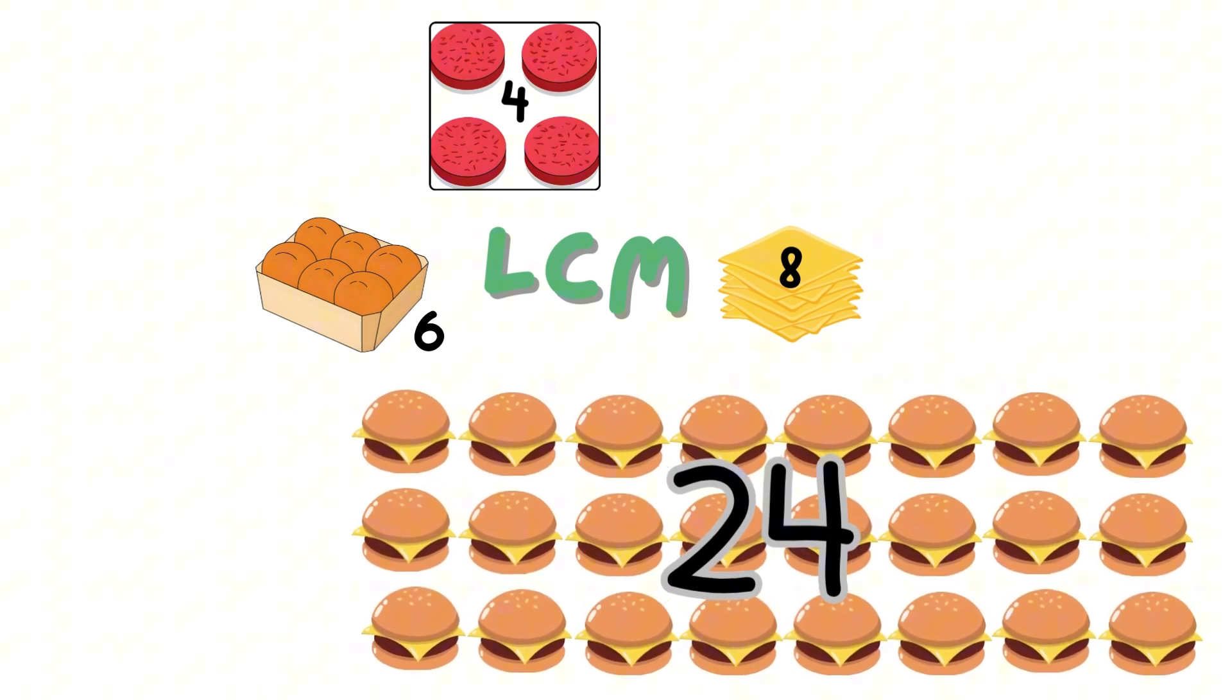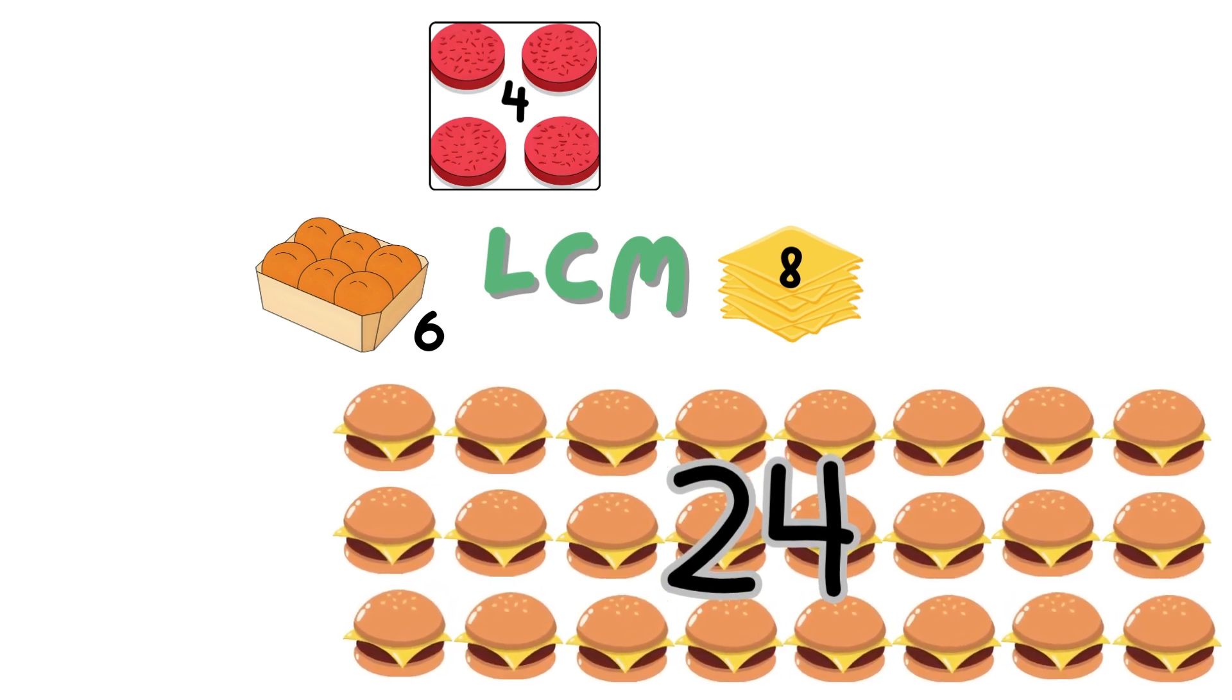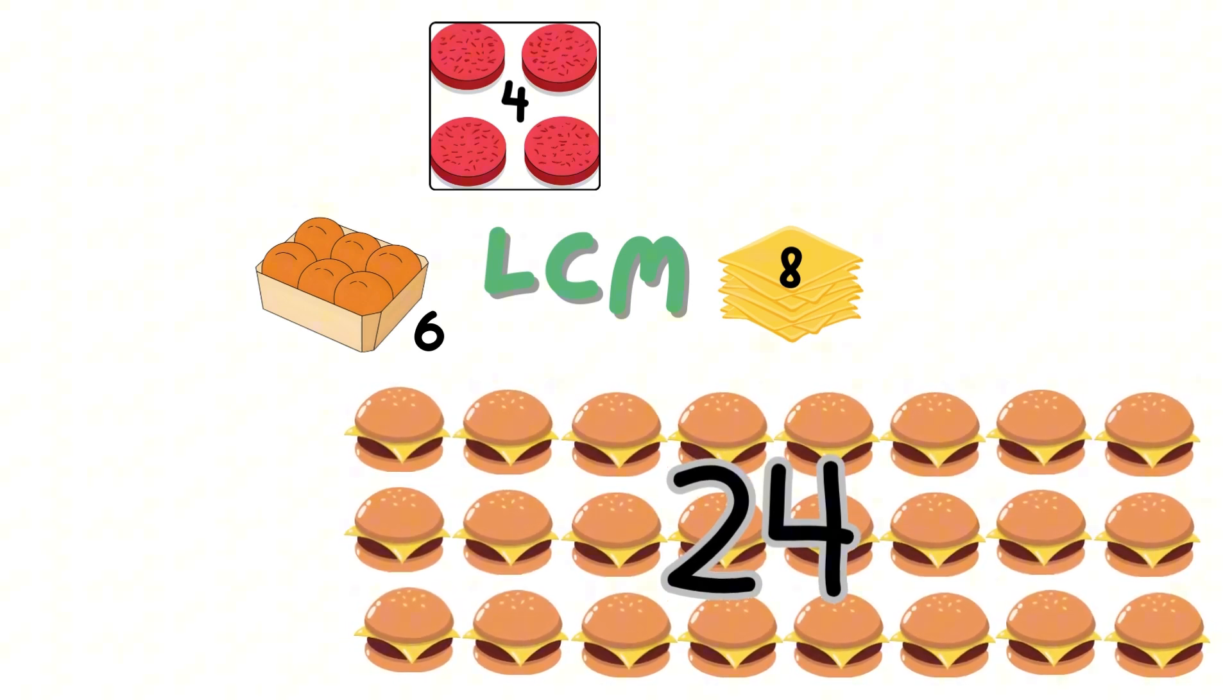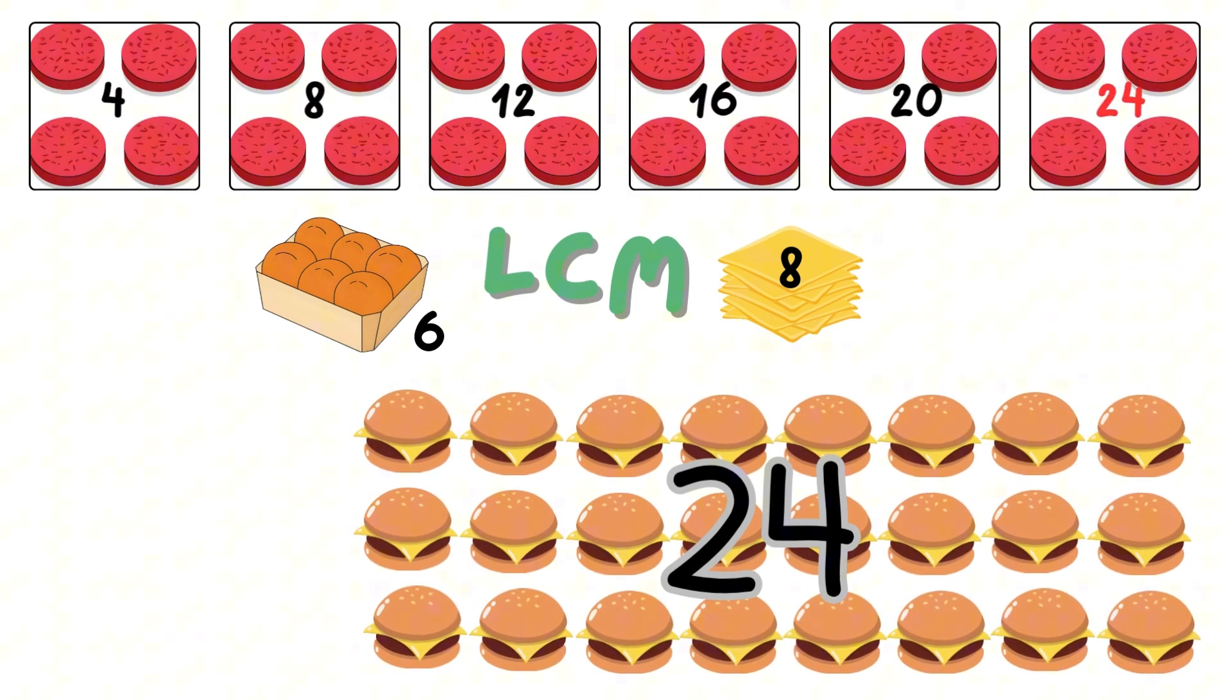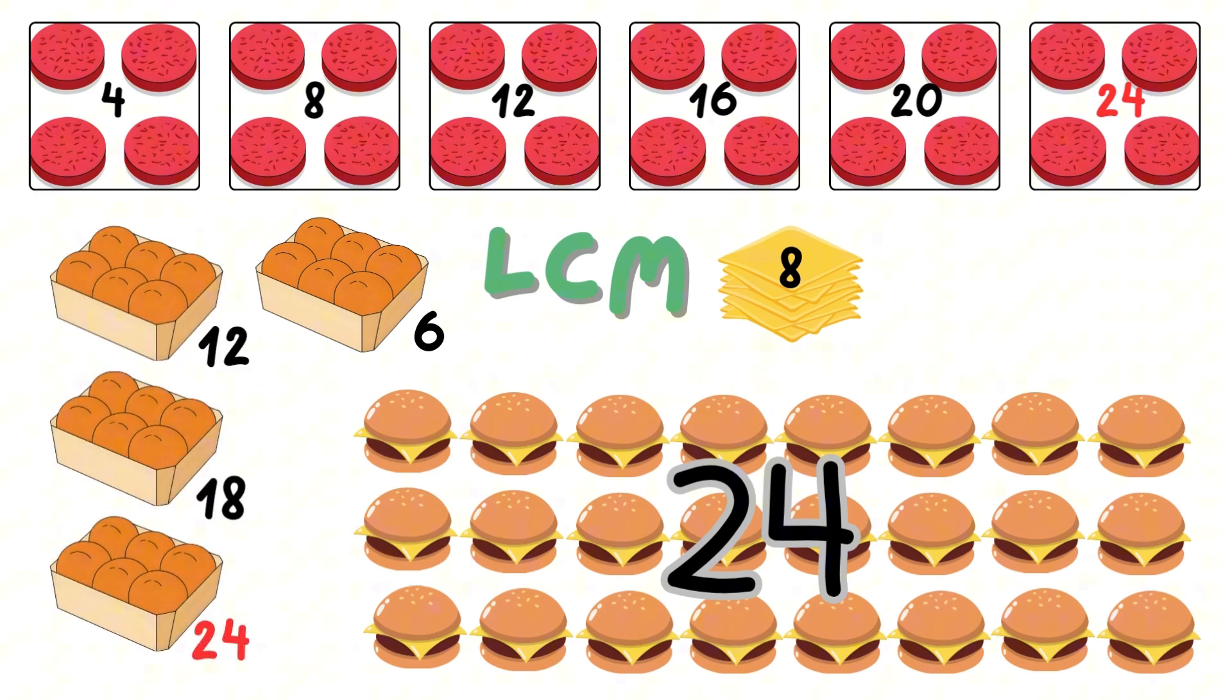Work out how many packs you need to make 24 cheeseburgers. 24 divided by 4 meat patties equal to 6. 24 divided by 6 burger buns equal to 4 packs. 24 divided by 8 cheese slices equals to 3 packs. So to make 24 cheeseburgers you'll need 6 packs of patties, 4 packs of buns and 3 packs of cheese.